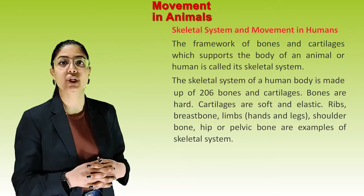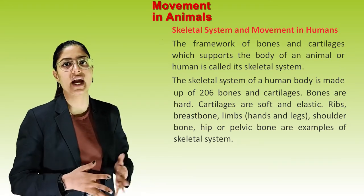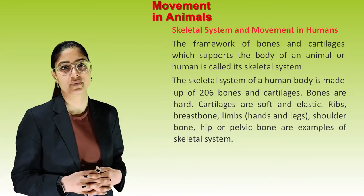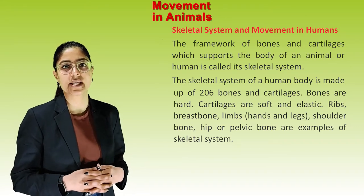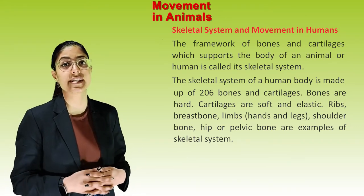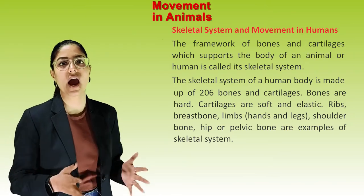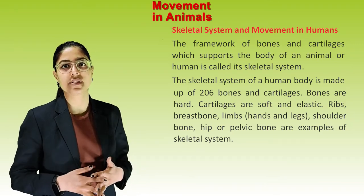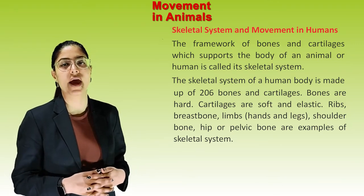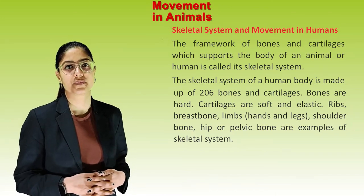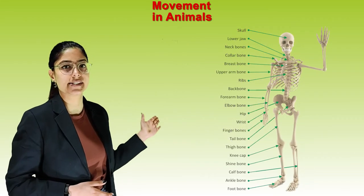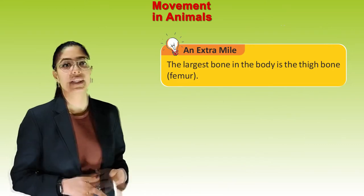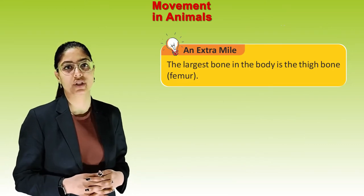Skeleton system and movement in humans. The framework of bones and cartilages that supports the body of an animal or human is called the skeleton system. The skeleton system of the human body is made up of 206 bones and cartilages. Bones are hard; cartilages are soft and elastic. Examples include ribs, breastbone, limbs, shoulder bones, and hip or pelvic bones. The largest bone in the body is the thigh bone, or femur.